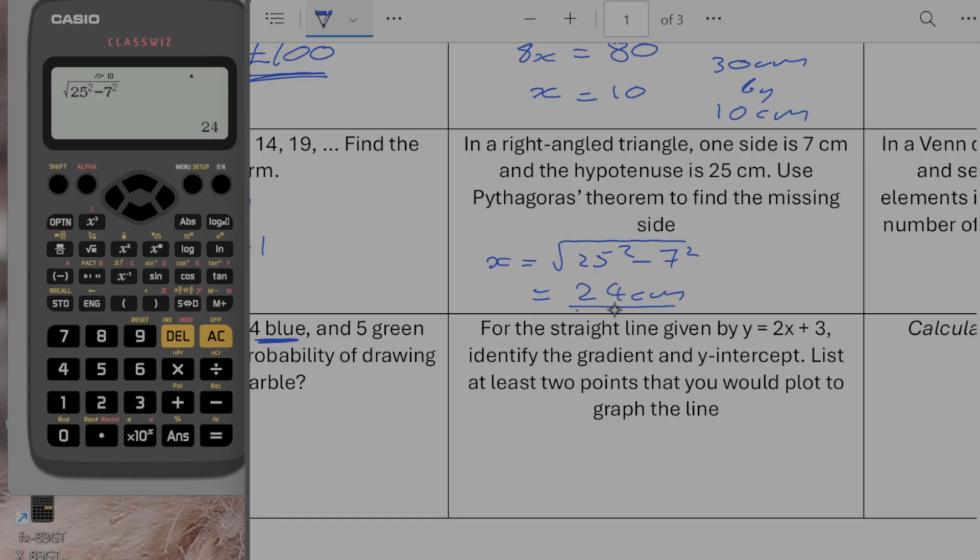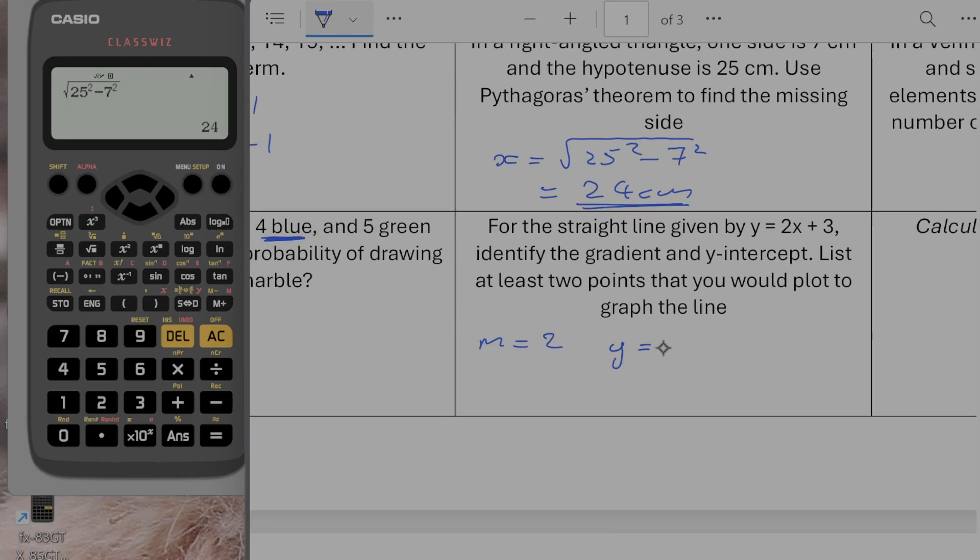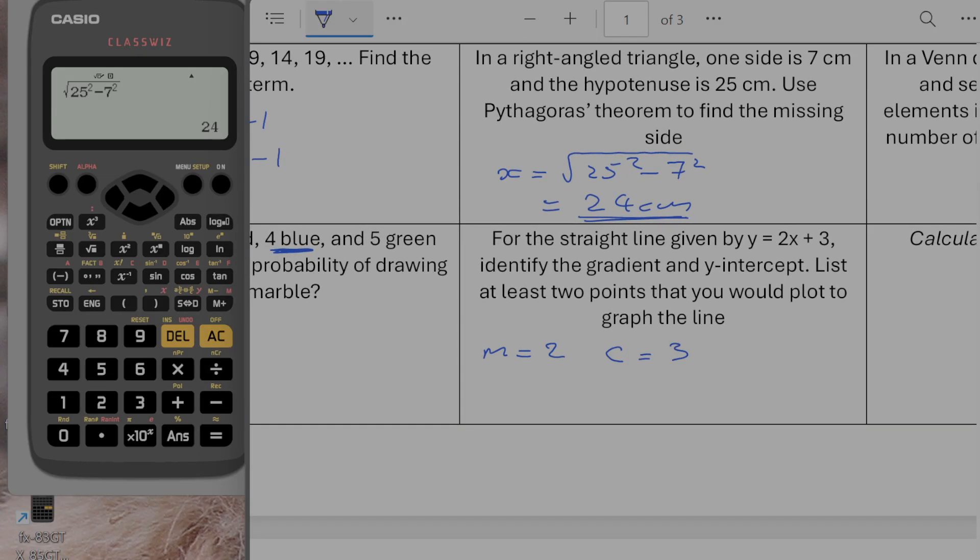For a straight line y is equal to 2x plus 3, identify the gradient and the y intercept. List at least two points that you would plot to graph this line. Right so the gradient is going to be equal to 2 and the intercept on the y axis is going to be equal to 3. And then you can show any point. One example would be 0, 3. If we did another one let's say 10, 23 would be another point on the line.